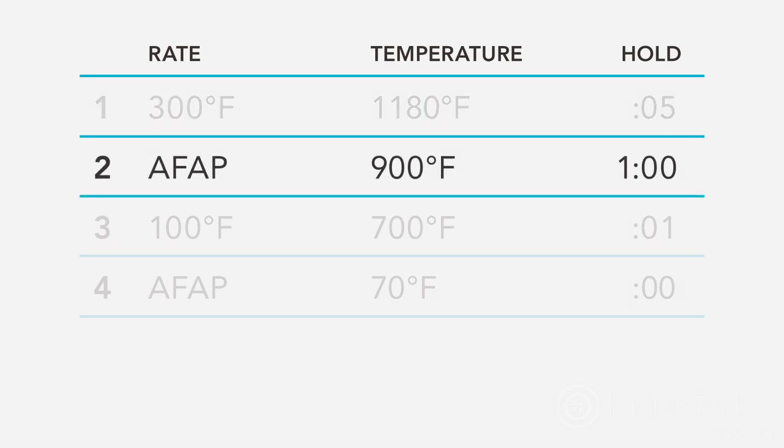The second segment encompasses the rapid cool and the anneal soak. Cool the kiln as fast as possible to 900 degrees and hold it for 1 hour. Allow the kiln to cool at its natural rate with the door closed.